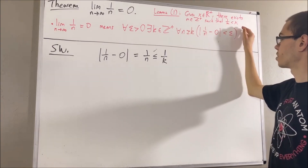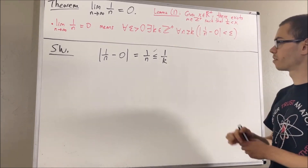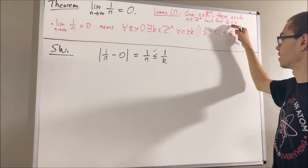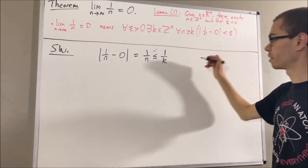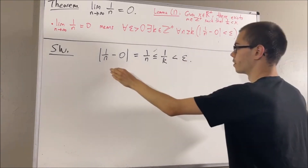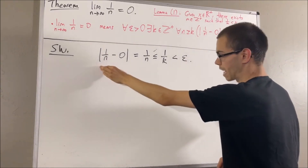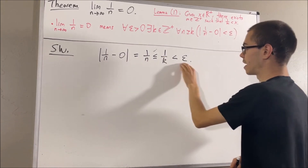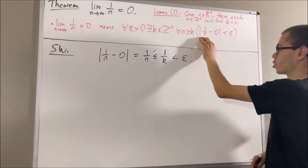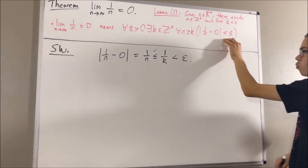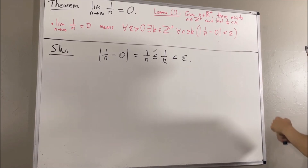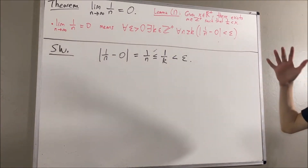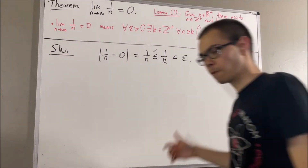And so we could take m to be k, which means 1 over k is less than epsilon. So we have that the absolute value of 1 over n minus 0 is less than epsilon, which is what we ultimately want to end up showing. Okay, so now let's get into writing up our proof.